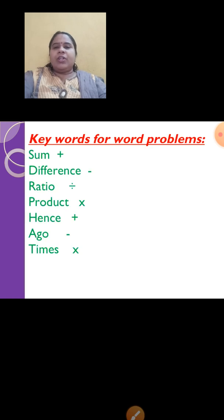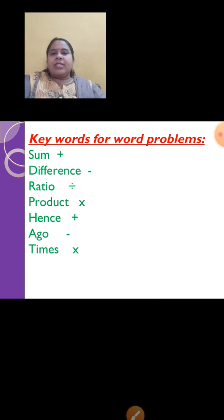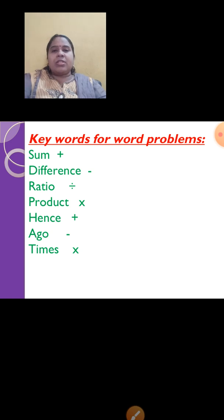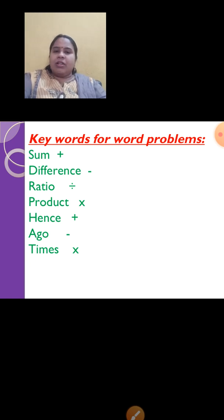Now I am giving you keywords to remember for word problems. Whenever the word 'sum' is used, it indicates addition. 'Difference' means subtract. 'Ratio' — for example ratio between 2 numbers is 3 is to 5 — means division. 'Product' means multiplication. When it is said '3 years hence the age will be', 'hence' is always plus. '4 years ago the age was' — 'ago' means minus.